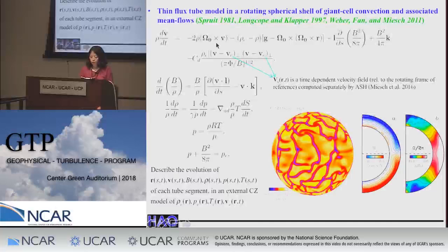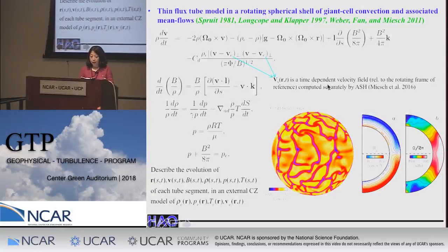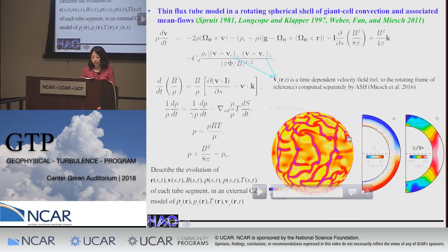The equation of motion describes individual tube elements subject to integrated forces: the Coriolis force, the buoyancy force, pressure gradient along the tube, and the magnetic tension. A hydrodynamic drag force captures the impact of a time-dependent external velocity field—convection and mean flow—on the tube motion. For this external velocity field, we use a separately computed global convection simulation by ASH, which produces giant cell convection and a solar-like differential rotation.